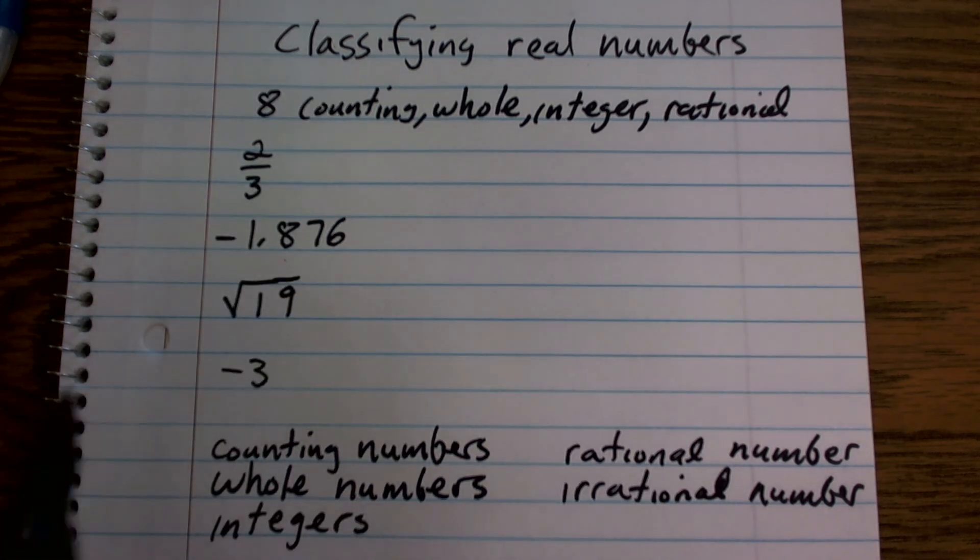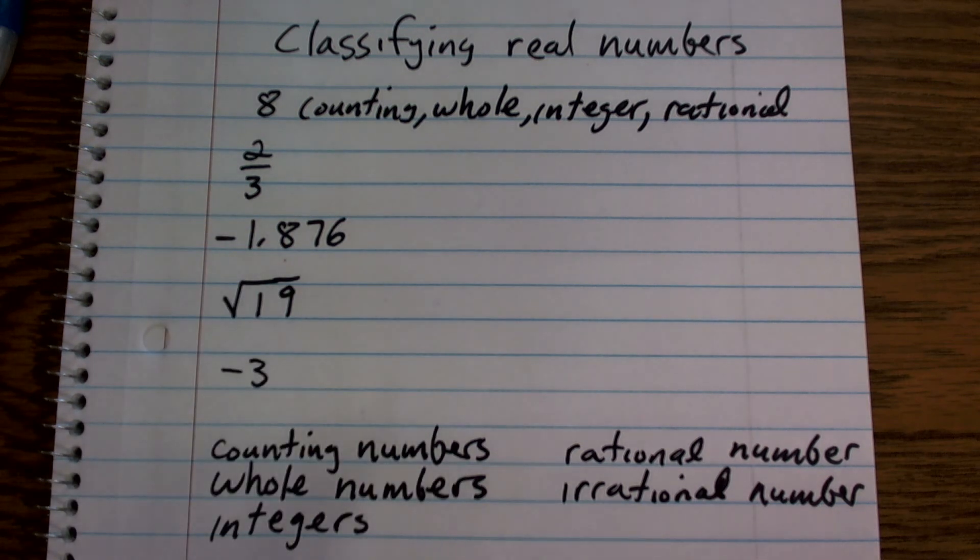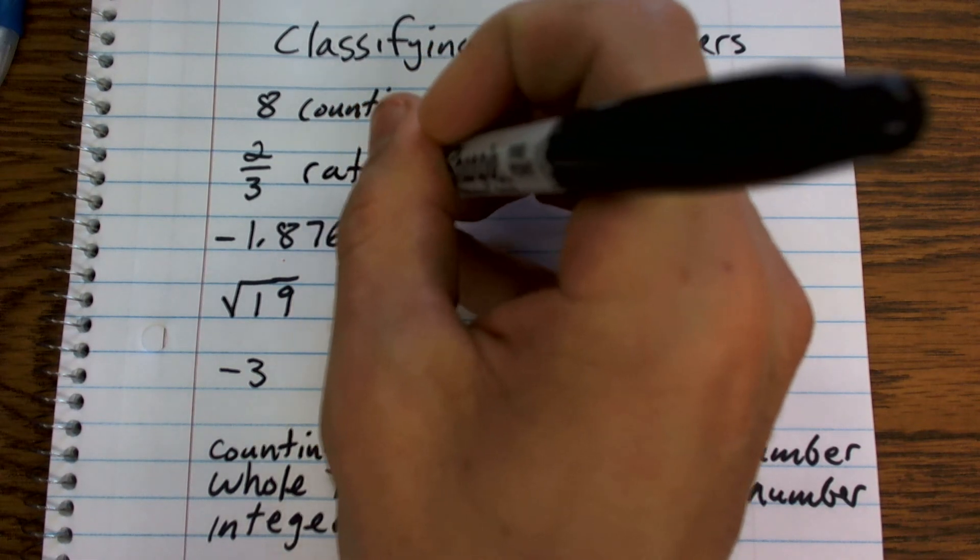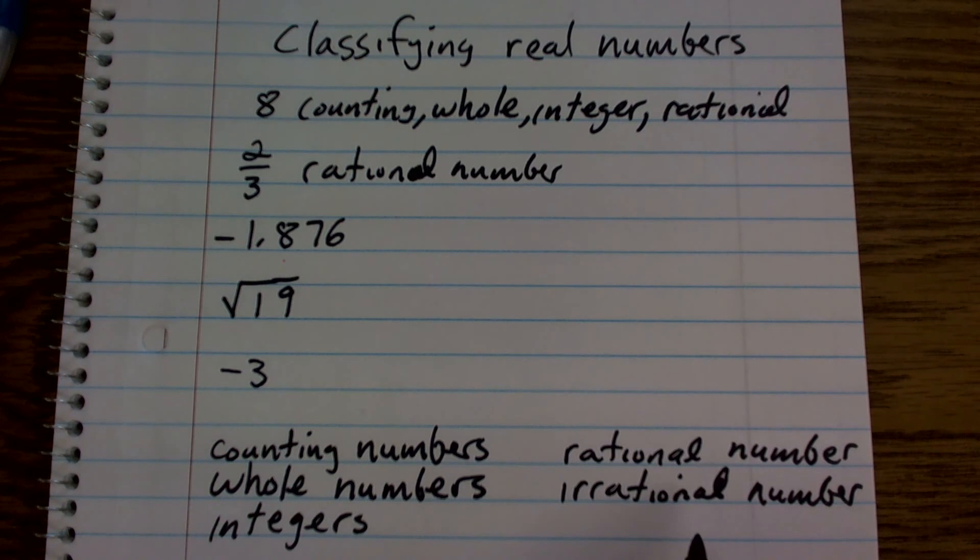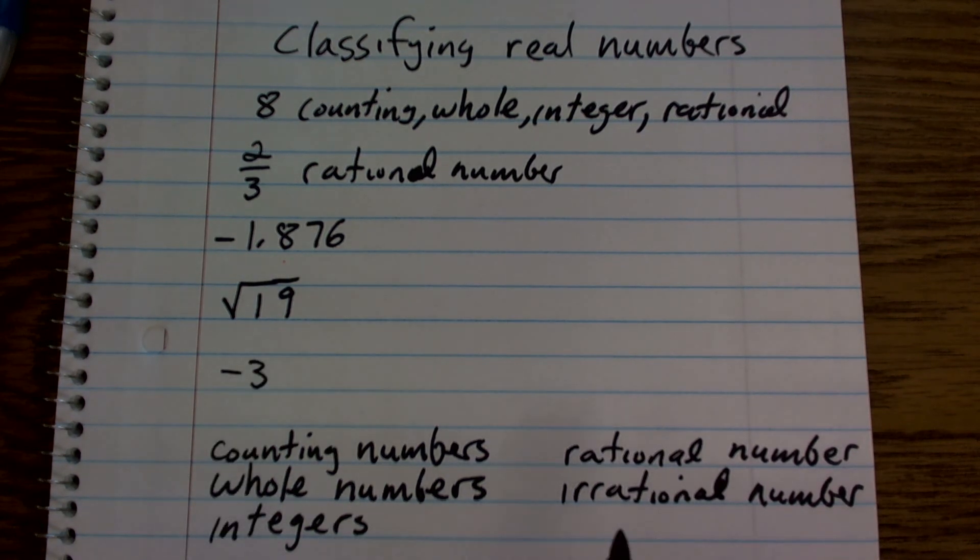Then for 2 thirds, 2 thirds is not a counting number. It is not a whole number. It's not an integer. However, it is a rational number. It is not irrational, though, because I can write it as a fraction.